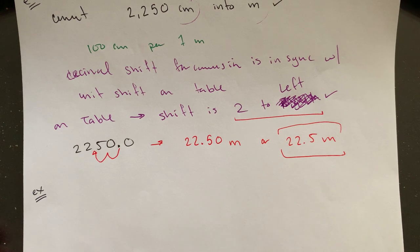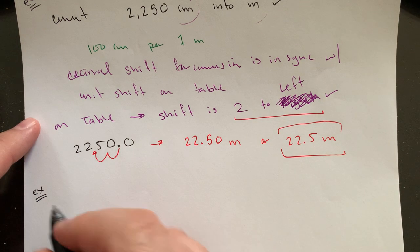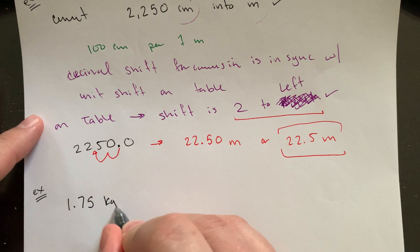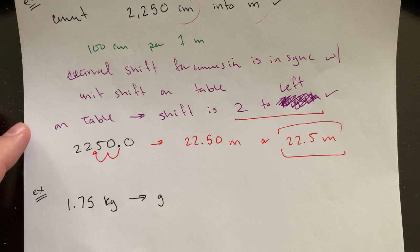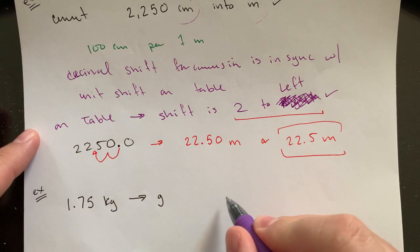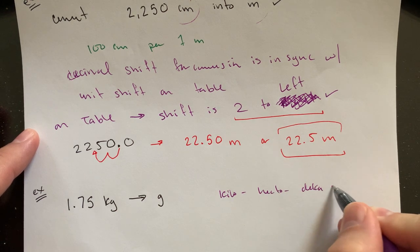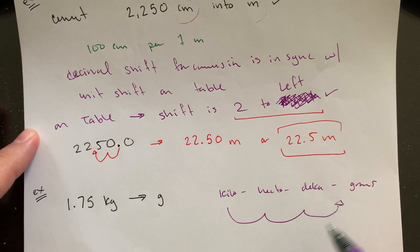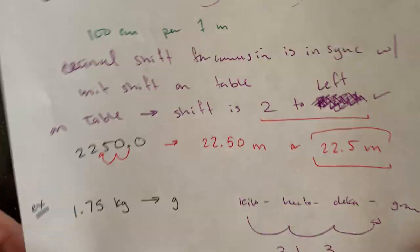Let's take another example. The idea is this works across all of the different units, so this is the same kind of setup not just for the meters but also the liters and the grams. Maybe I have 1.75 kilograms and I want to convert it into grams.